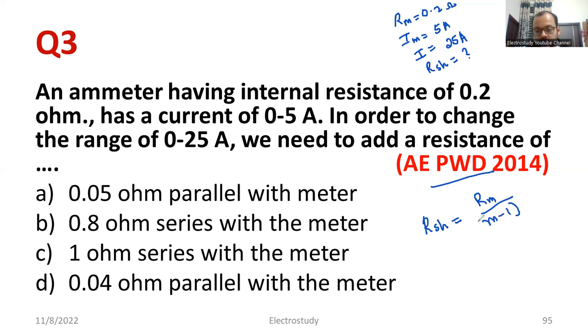This is the formula: shunt resistance equal to RM by M minus 1, where M is nothing but I divided by IM, I by IM. It is nothing but multiplication factor. What is I? I is 25. IM is nothing but 5. So 25 by 5 is nothing but 5. It is a unitless quantity.